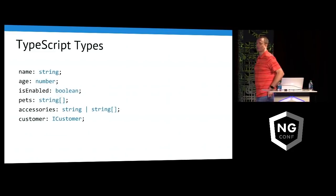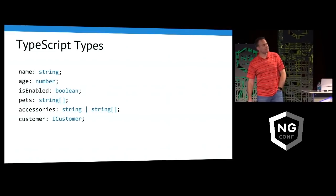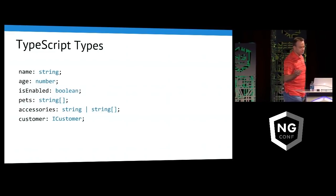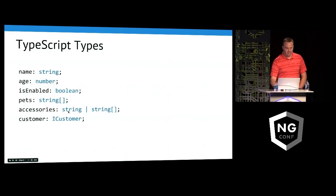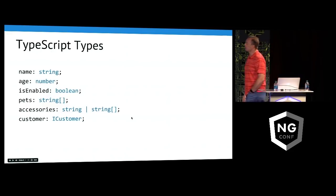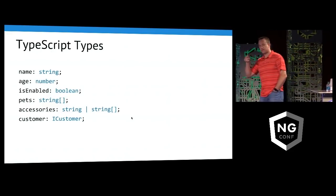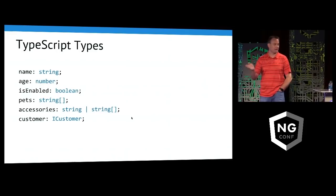Here's an example. Age is a string, we have a number, something needs to be marked as a boolean. But notice this accessories here. This is called a union type, and this allows us to say accessories can be a string, or if you want, a string array.